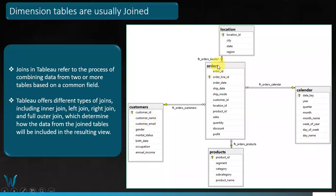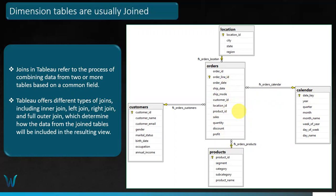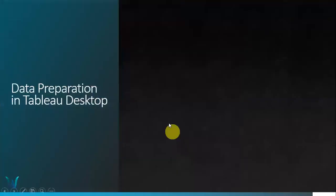Here is a pictorial representation of what joins look like. You have a central fact table, and you join other tables based on common fields — for example, customer ID links to the location table via location ID, and the calendar table via date key, order date, or ship date. The products table is joined via product ID. Based on your analytical needs, you might use an inner join, left join, right join, or full outer join.